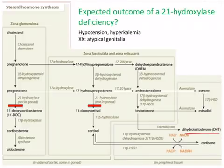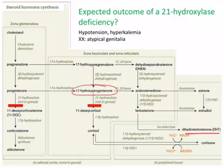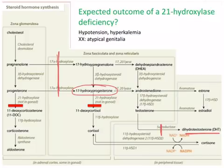Because of the seriousness of this condition, 17-hydroxyprogesterone is on newborn screening tests. I recommend that you practice thinking through what would happen with other enzyme deficiencies, such as a 17-hydroxylase deficiency or a 5-alpha-reductase deficiency.